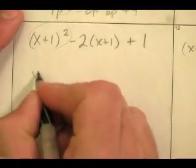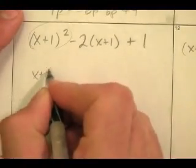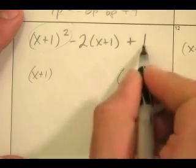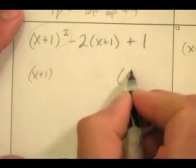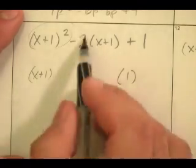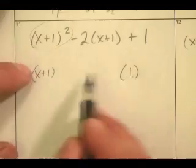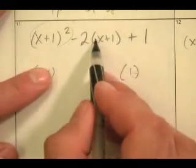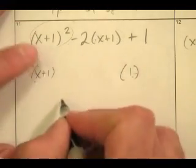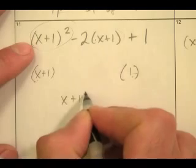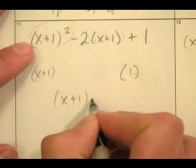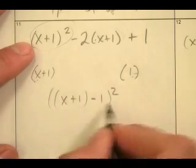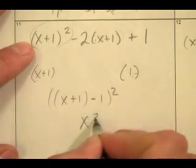Double check. Is the first term a perfect square? Yes — the square root is (x+1). Is the last term a perfect square? Yes — the square root is 1. Is the middle term twice the product of (x+1) and 1? Yes. So it factors as ((x+1) minus 1) squared, which simplifies to x squared. That's pretty crazy!